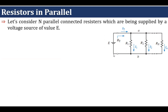Consider N resistors R1, R2 up to Rn connected in parallel. They are all connected in parallel because one end of all the resistances is connected at one node and the other ends are connected to another node, and that is why it is known as a parallel connection.